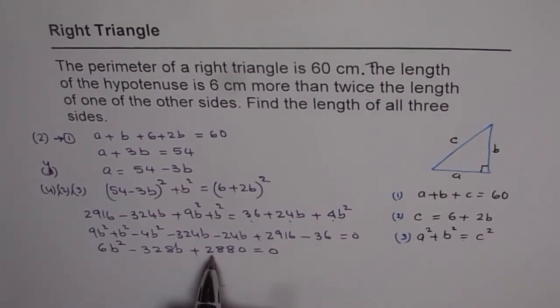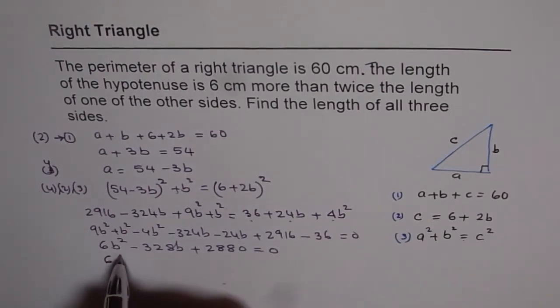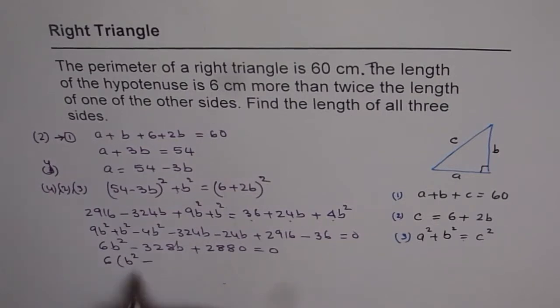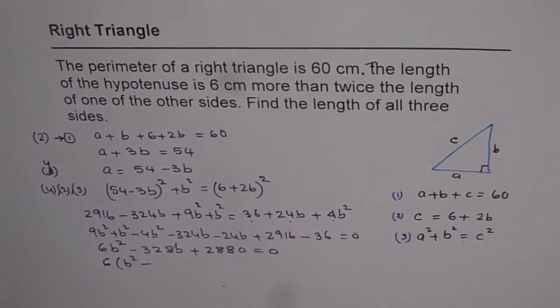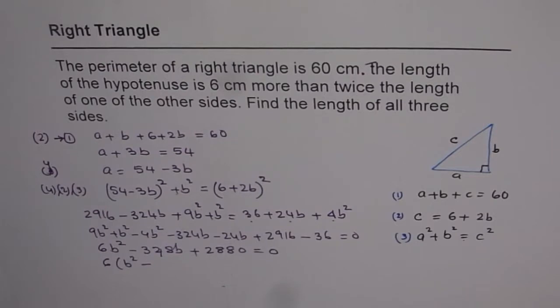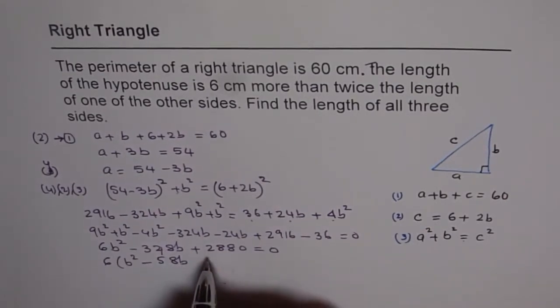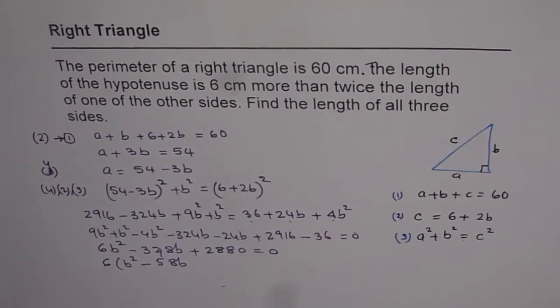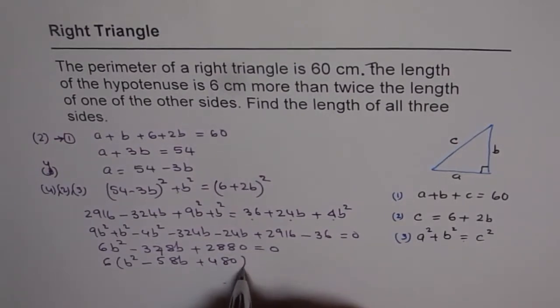That is the quadratic equation in b. We can take 6 common. We get b square minus 58b plus 480 equals 0.